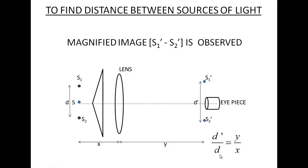This is the relation between the size of the image and the size of the object. Size of image divided by size of object equals y over x, where y is the distance of the image from the lens and x is the distance of the object from the lens. This is the well-known relation: size of image over size of object = v / u, i.e., distance of image to distance of object.